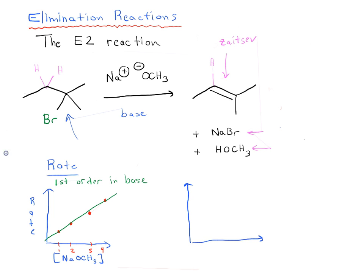Let's have a look at what the concentration is versus the substrate. We'll do the same exact grades on our graph here: 1, 2, 3, and 4. The rate increases linearly with concentration of our substrate, so it's also first order in substrate, or in other words, alkyl halide.